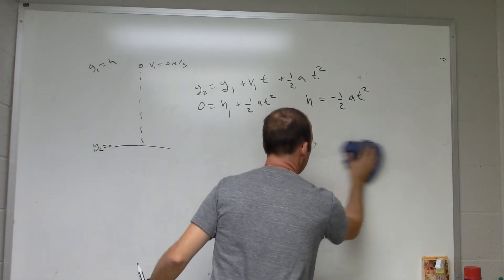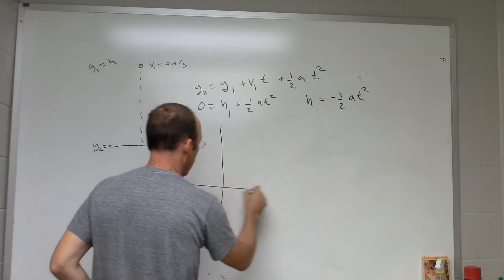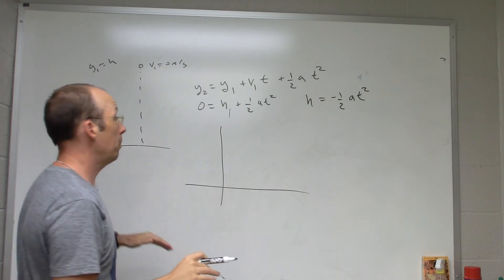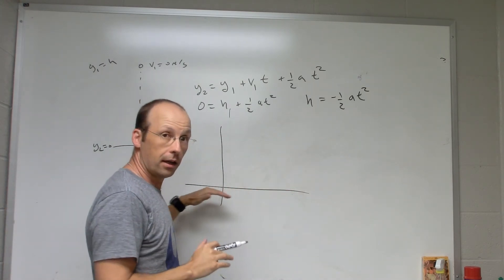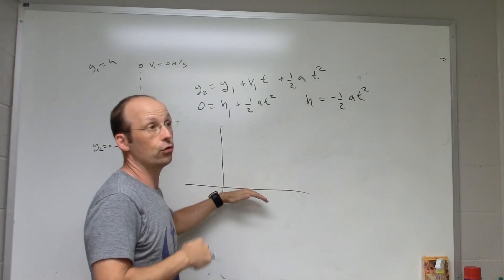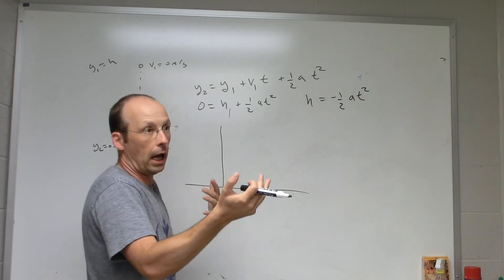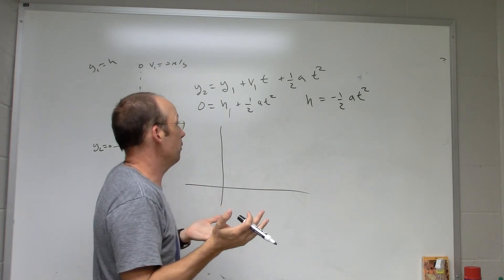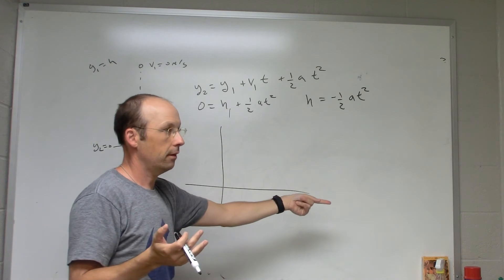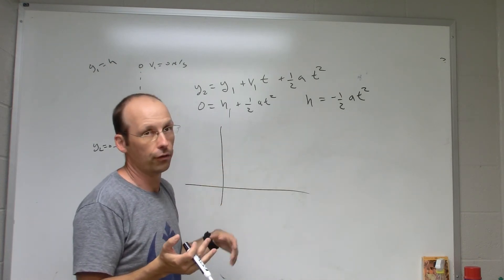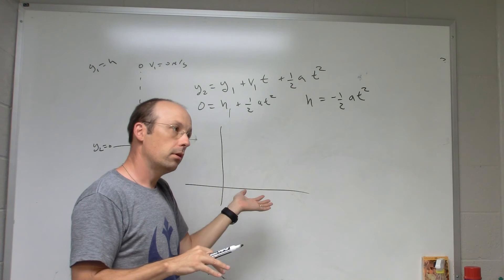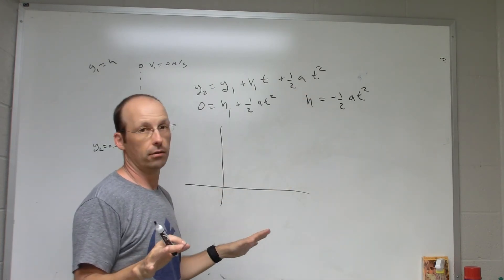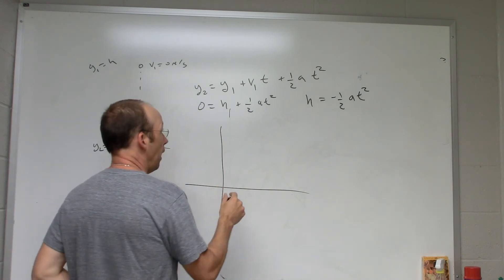There are two approaches. Normally in a lab we put the independent variable — the thing you change — on the horizontal axis. In this case I'm actually changing the height, but for mathematical reasons I'm okay with rearranging that. Some people in chemistry might object, but let's move on.